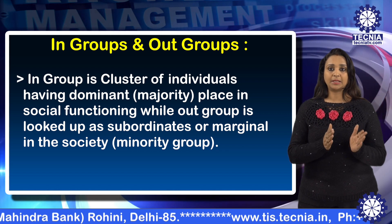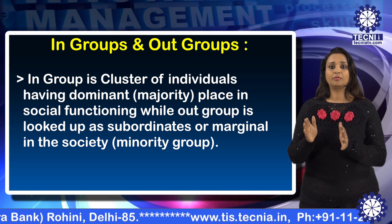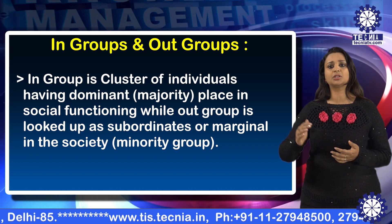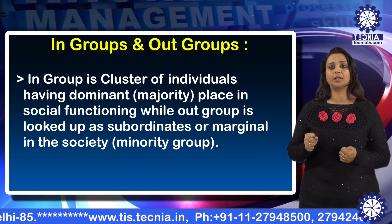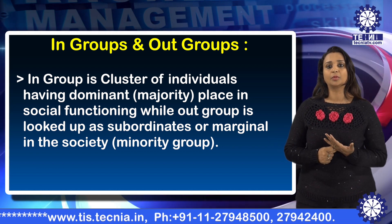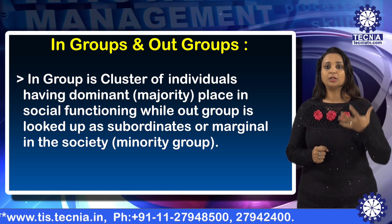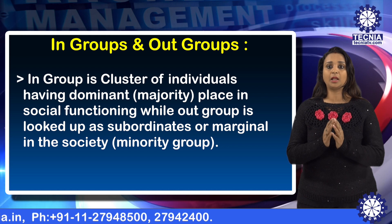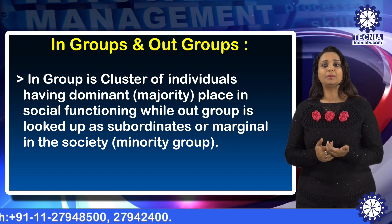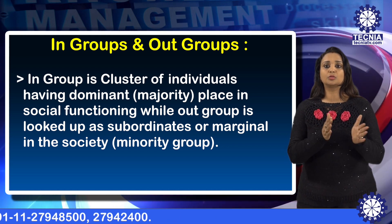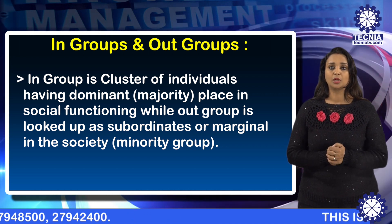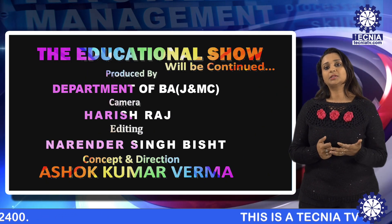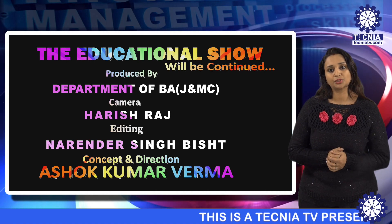The last type of group is in-group and out-group. The in-group is a cluster of individuals having dominance or majority status in social functioning, while the out-group is looked upon as subordinate or marginal in society — that means the minority group. So the in-group refers to dominant people, and the out-group refers to submissive or minority people. These are the types of groups. I hope you understand the topic. Thank you so much.